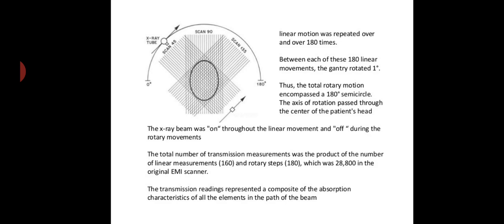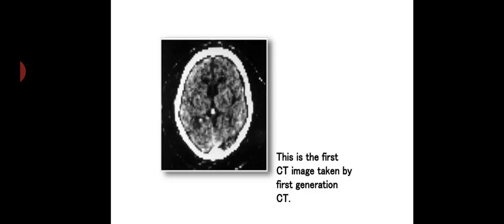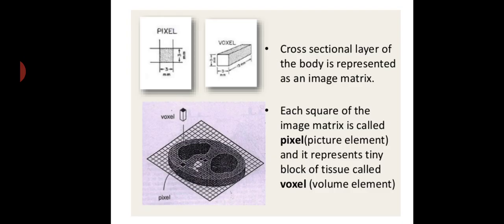The transmission reading represented a composite of the absorption characteristics of all elements in the path of the beam. This is the first CT image taken by the first generation scanner, obviously of the brain. Cross-sectional layer of the body is represented in the image matrix like this. Each square of the matrix is called the pixel, and it represents a tiny block of tissue known as the voxel. The picture element is the pixel and the volume element is the voxel.